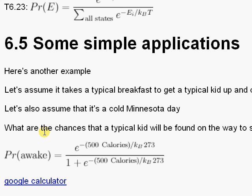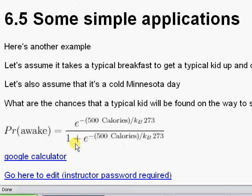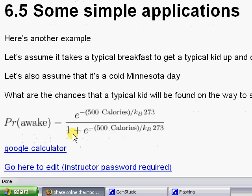So let's see here. Well, it's this very simple probability. The probability of being awake is e to the minus the energy of a breakfast—let's say 500 capital C calories—divided by Boltzmann's constant and, of course, divided by 273, which is a cold Minnesota day. And then you divide by all the possible ways this kid can exist. Well, there's the way we just calculated being awake. What about